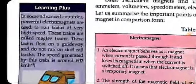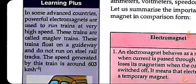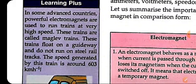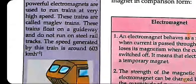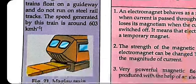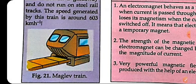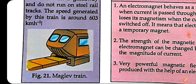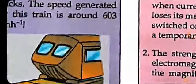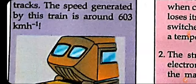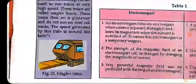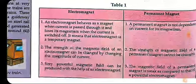Next let us discuss some interesting facts. In some advanced countries like Japan, powerful electromagnets are used to run trains at very high speed. These trains are called maglev trains. These trains float on the guideway and do not run on rail tracks. They float over the tracks due to magnetic effect and can travel at 603 kilometers per hour.